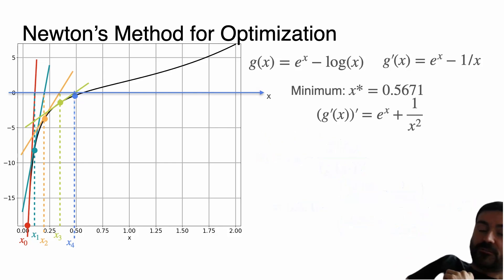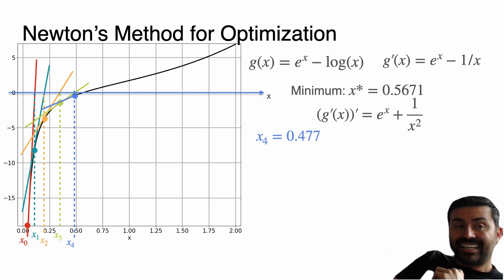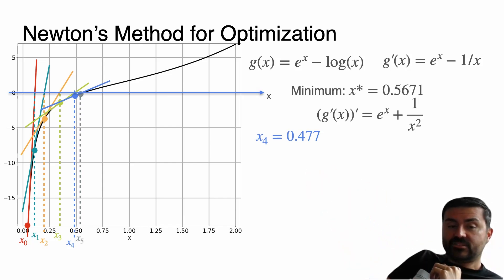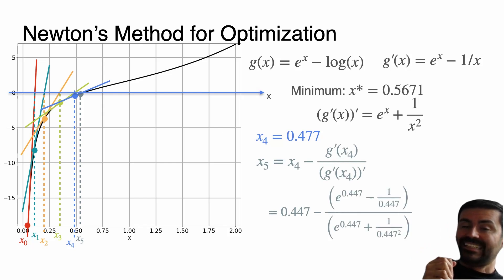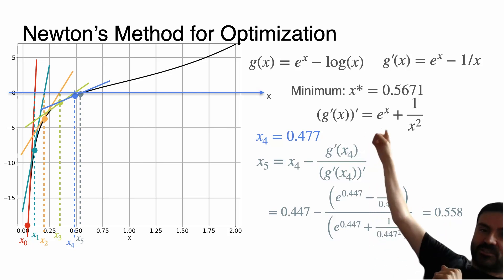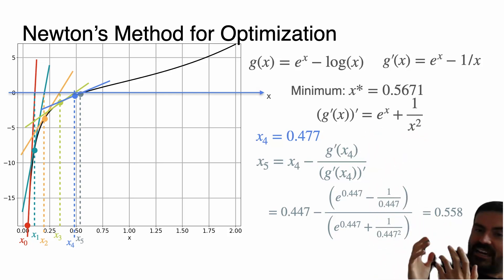Now let's do one more iteration. With x₄ = 0.477, then we're going to draw the tangent again. We're going to get that point of intersection, and to calculate it it's going to be x₅ equals this number over here which ends up being 0.558. We're supposed to get to 0.5671 and we're already at 0.558 after just five iterations. So that's pretty good.